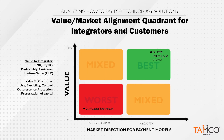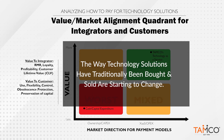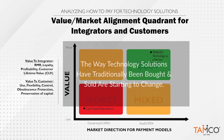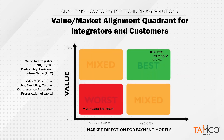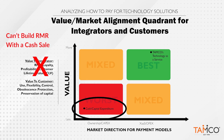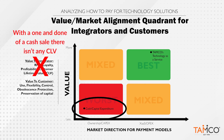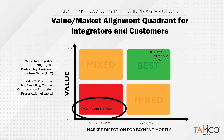The way these solutions have been bought and sold for years and years is starting to change. The reason it's starting to change is because cash and CapEx — at the bottom left — don't align with what's important to an integrator. You can't build RMR through a cash sale; it's counterintuitive. The profitability is usually a one-and-done, so there isn't that customer lifetime value. On the other side, customers don't gain any flexibility, control, or protection from obsolescence from a cash sale, and they're certainly not preserving their CapEx or cash after-tax dollars.